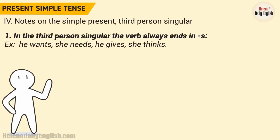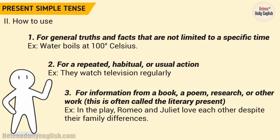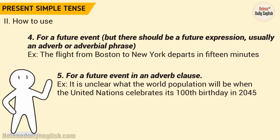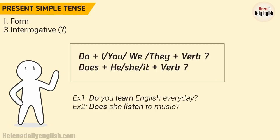4. Notes on the Simple Present — Third Person Singular. For information from a book, a poem, research, or other work — this is often called the literary present. Example: In the play, Romeo and Juliet love each other despite their family differences. 4. For a future event, usually with an adverb or adverbial phrase. Example: The flight from Boston to New York departs in 15 minutes. 5. For a future event in the adverb clause. Example 1: Do you learn English every day? Example 2: Does she listen to music?